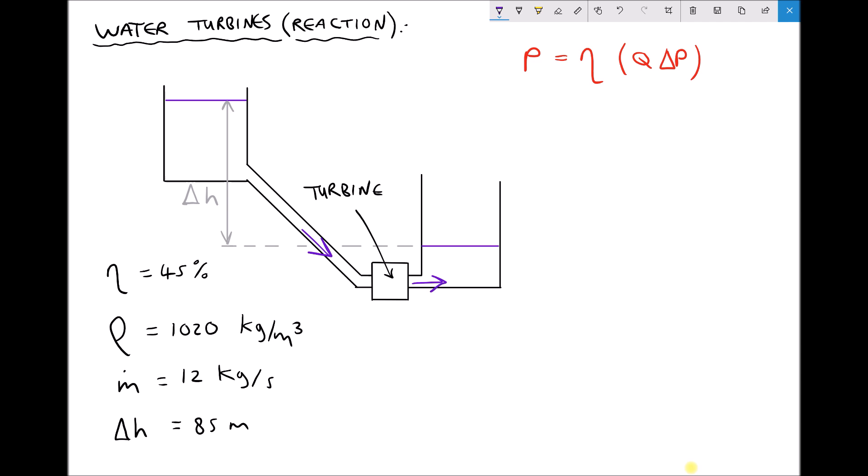Once again it's important to understand why this is a reaction turbine as opposed to an impulse turbine. The reason is because the only way that energy can be recovered from the fluid is because there's a pressure drop across the turbine.